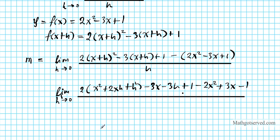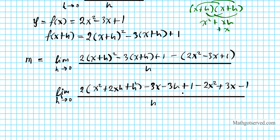Now, in case I lost anybody when distributing x plus h squared — see this piece right here — you can just write x plus h times x plus h and use FOIL: first, outer, inner, last. You get x squared plus xh plus xh plus h squared, which combines to x squared plus 2xh plus h squared. There's a shortcut for this if you know it; if not, just multiply it out and you'll get the same result. So let's distribute the 2.